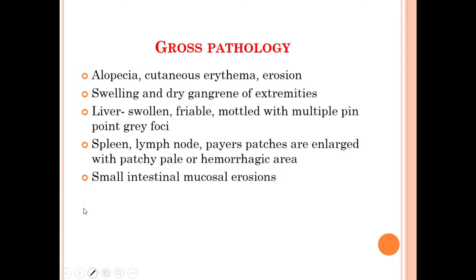Under the gross pathology of infectious ectromelia, you can see alopecia, cutaneous erythema, and erosions in infected mice, as well as swelling and dry gangrene of the extremities. In the liver, you can see a swollen, friable, mottled appearance with multiple pinpoint gray foci. Spleen, lymph nodes, and Peyer's patches are enlarged with patchy pale or hemorrhagic areas. Small intestinal mucosal erosions are also seen.